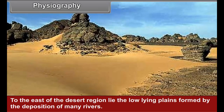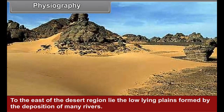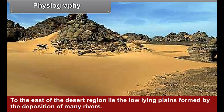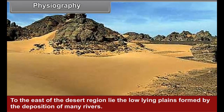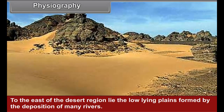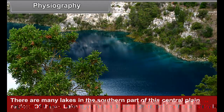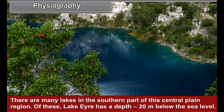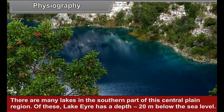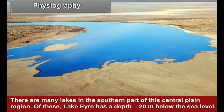To the east of the desert region lie the low-lying plains formed by the deposition of many rivers. There are many lakes in the southern part of this central plain region. Of these, Lake Eyre has a depth of minus 20 meters below sea level.